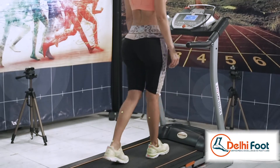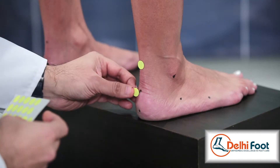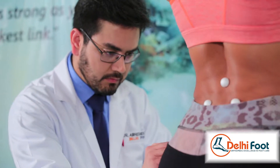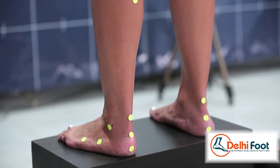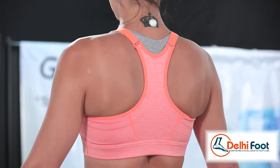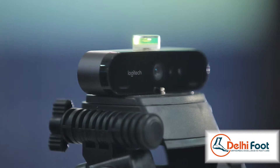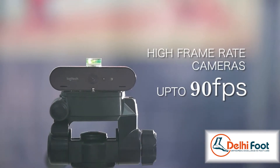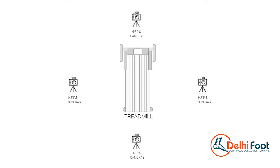Then we need a treadmill to walk or run on. We need stick-ons, surface and proud markers for various anatomical landmarks as references before the motion starts. Cameras with high frames per second — as high as 90 — shoot from the front, back, and both sides while you walk or run.